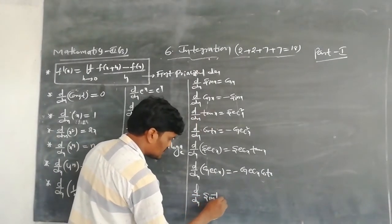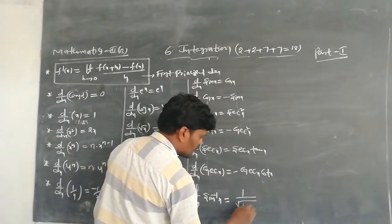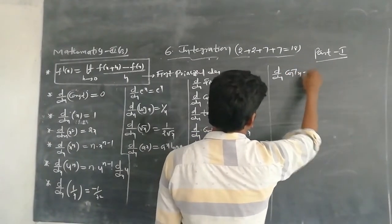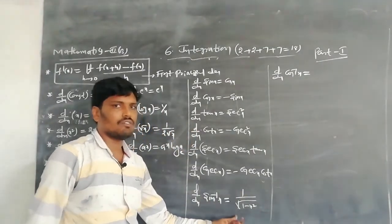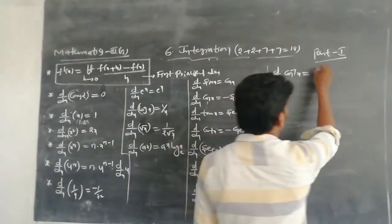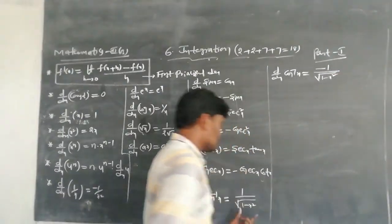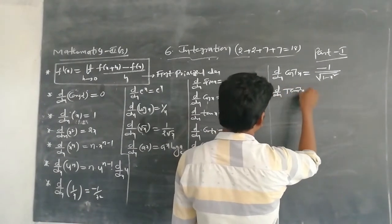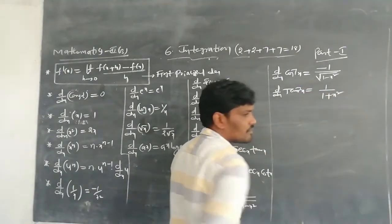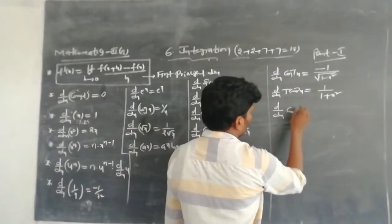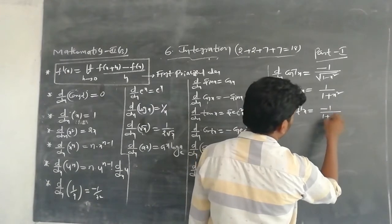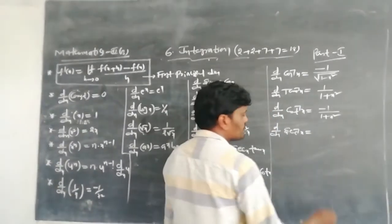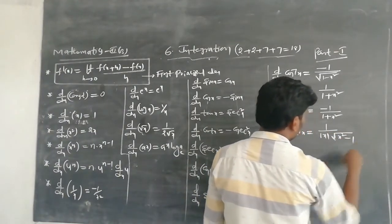Derivative of sin⁻¹x is equal to 1/√(1−x²). For cos⁻¹x, just put a negative sign: −1/√(1−x²). For cot⁻¹x: −1/(1+x²). d/dx of sec⁻¹x = 1/(|x|·√(x²−1)). These are the inverse trigonometry derivatives.